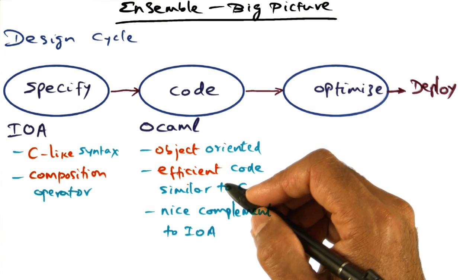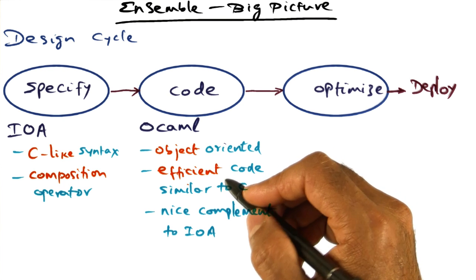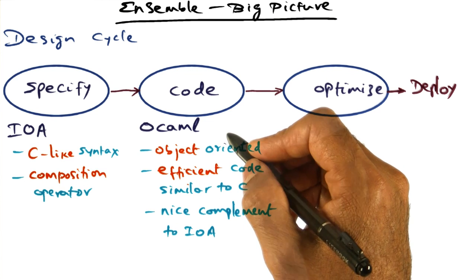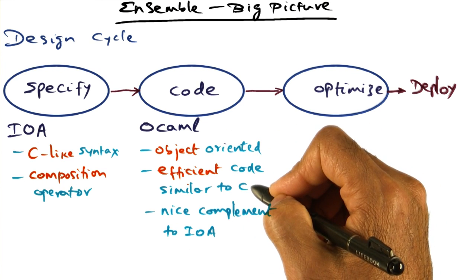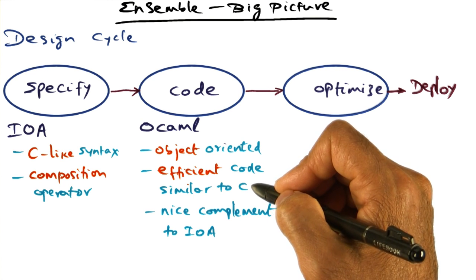And third, perhaps the most important characteristic from an operating system designer's point of view is that the code that you can generate with OCaml is as efficient as C code. This is super important when you're developing operating systems because you care about performance.